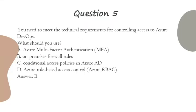Question 5. You need to meet the technical requirements for controlling access to Azure DevOps. What should you use? A. Azure Multi-Factor Authentication (MFA). B. On-premises firewall rules. C. Conditional access policies in Azure AD. D. Azure Role-Based Access Control (Azure RBAC). Answer: B and A.